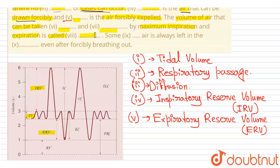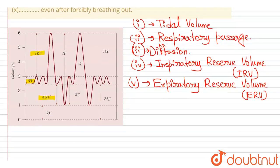Inspiration is when we take in the air, and expiration is when we take out the air. So number six will be 'taken in' and number seven will be 'taken out.' The volume of air that can be taken in by maximum inspiration and expiration is called vital capacity — the maximum amount of air a person can expel after the deepest possible inspiration.